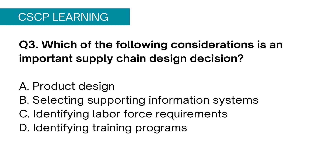Question 3: Which of the following considerations is an important supply chain design decision? Option A, product design; Option B, selecting supporting information systems; Option C, identifying labour force requirements; Option D, identifying training programs. Option A, product design, seems the most appropriate since supply chain revolves around the product and product design plays a vital role in logistics, marketing, and other major functions. Option B can be important too but it helps design the product, so it is not the primary answer. Options C and D are irrelevant and have nothing to do with supply chain design. Therefore Option A is the right answer.